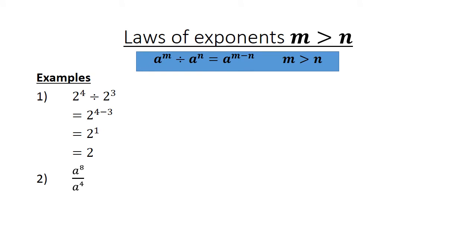a to the power of 8 divided by a to the power of 4 equals a to the power of 8 minus 4, which equals a to the power of 4.